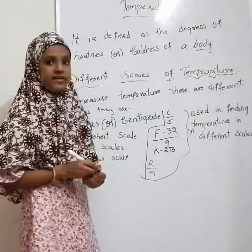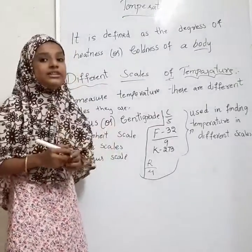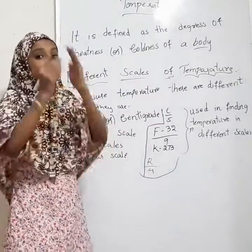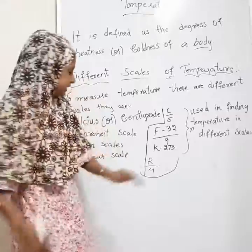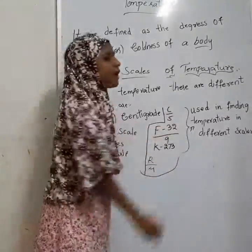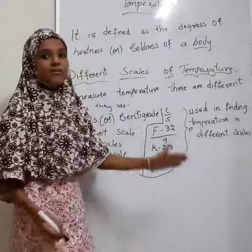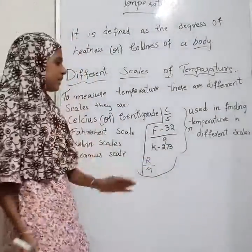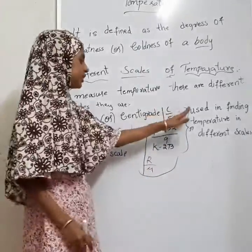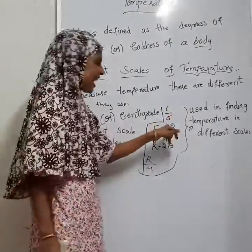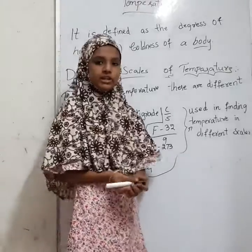For example, if you are given a temperature and asked to find the degrees in different scales, you will use the formulas. Now let us work with the formula: C by 5 equals F minus 32 by 9.